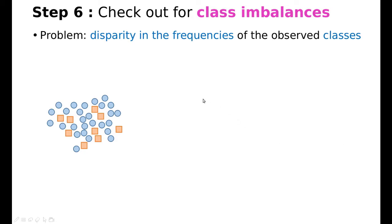In the video about preprocessing, we talk about class imbalances, which basically means that we have some categorical variable in which one of the classes is more represented than the others. So in this case, we have more oranges than blues. So we have a couple of strategies to solve this.